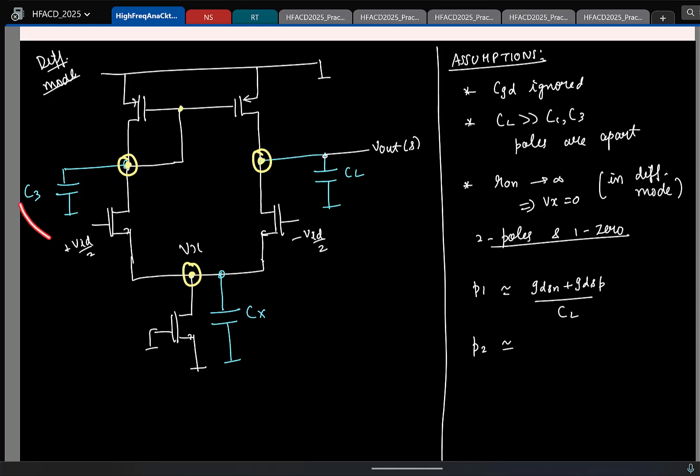I have the second pole due to C3. And what is the resistance looking here? 1 by Gm. This was short when you computed the pole due to C3. So, looking here was just 1 by Gm of the PMOS. So, this is Gmp by C3. And since Vx is zero, this capacitor plays no role. That was an unobservable and uncontrollable state. And we had the zero calculated earlier, which was 2 Gmp by C3.